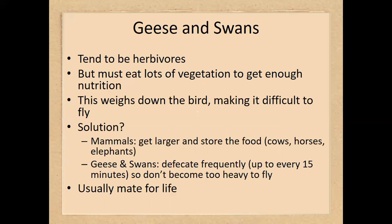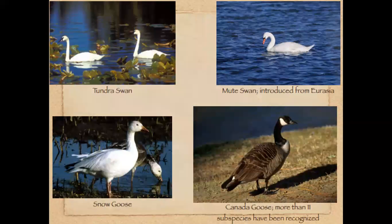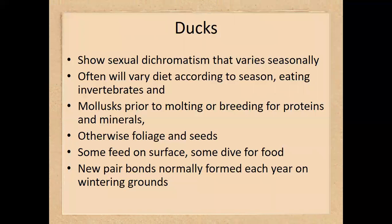Geese and swans generally mate for life. The Canada goose has more than 11 subspecies that have been recognized. Ducks show sexual dichromatism, or sexual dimorphism — a difference in coloration — with males being more colorful than females during breeding season.